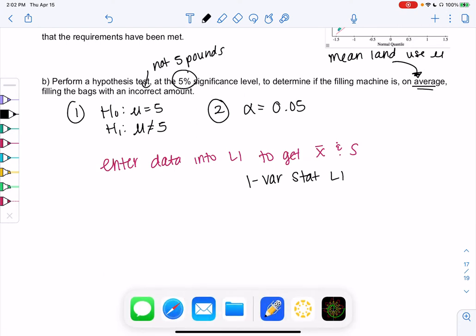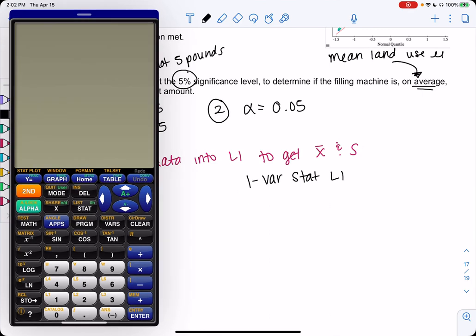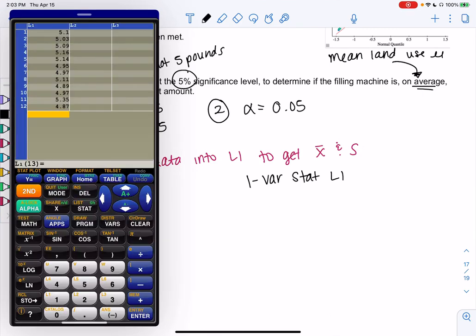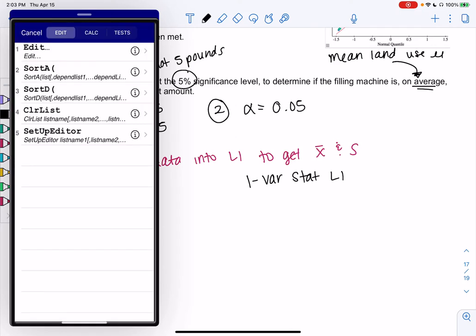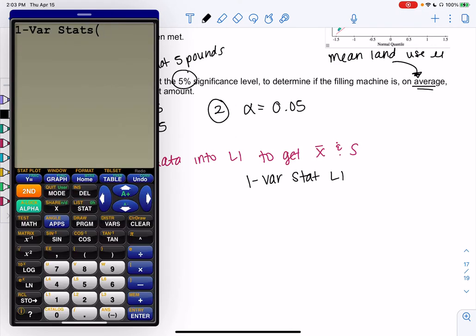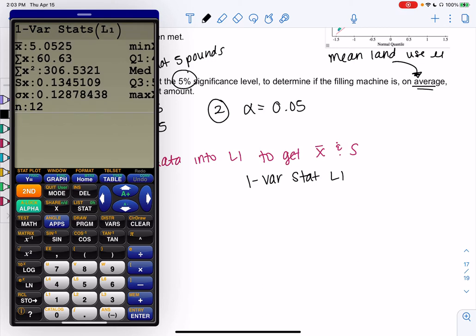I already did that, so go ahead and hit pause. And then you'll do 1 var stat L1. So come back once you've entered your data. I already did that. Stat, edit. I've already put everything in. So pause so you have time to put everything in. And then we'll do 1 var stat. And I'll write down the mean. We get a mean of 5.0525. We get a standard deviation of 0.13451. And then I'll just write down N as well, which was 12.